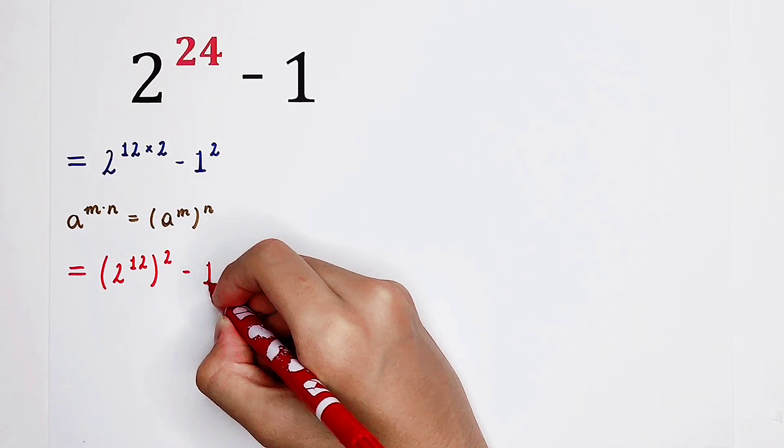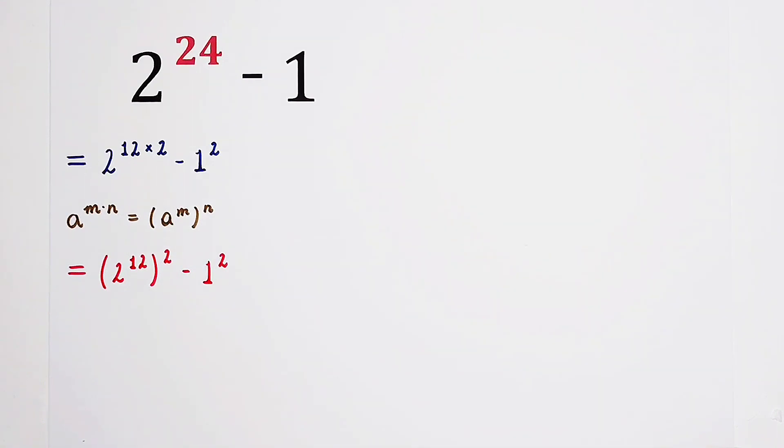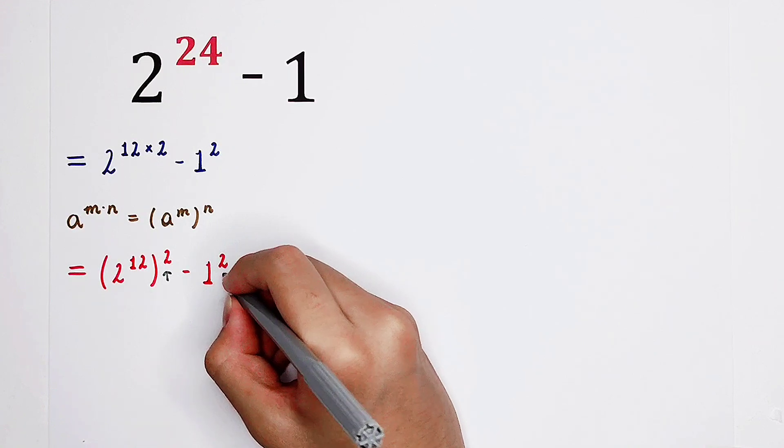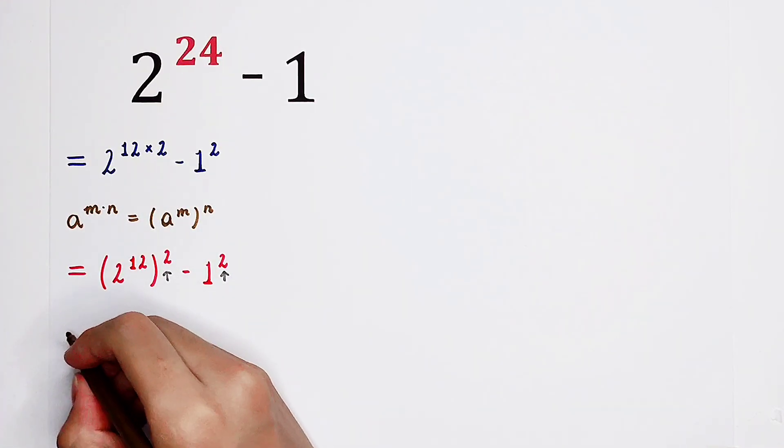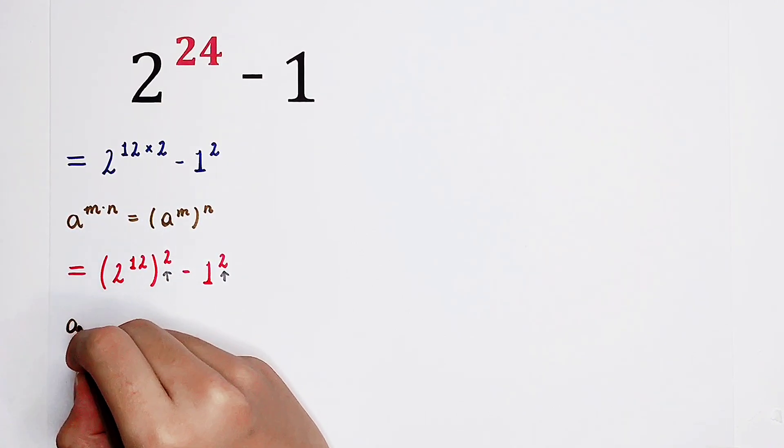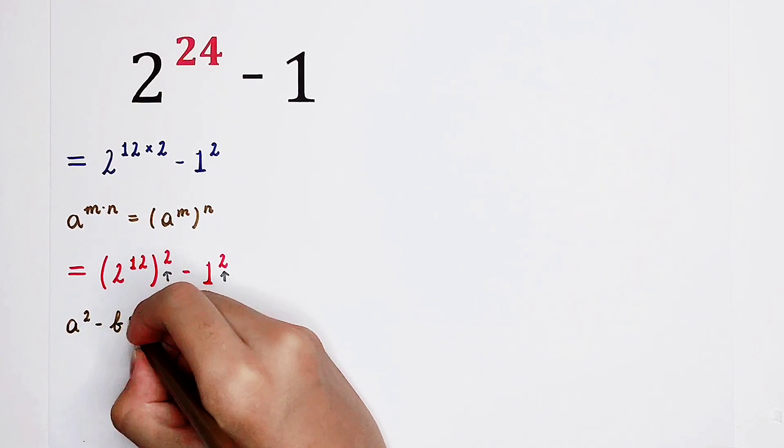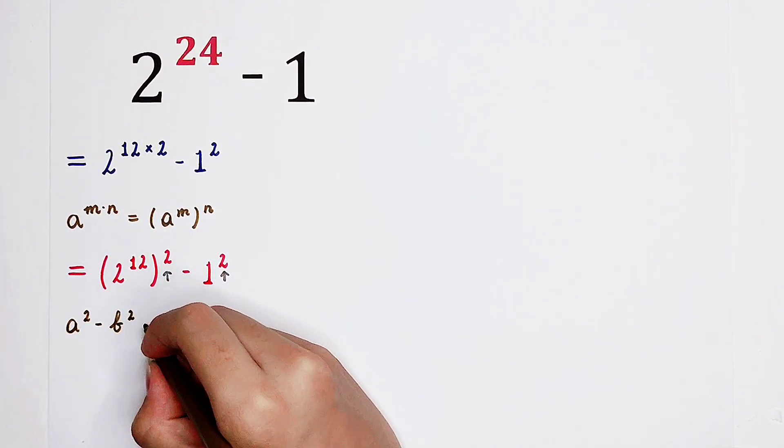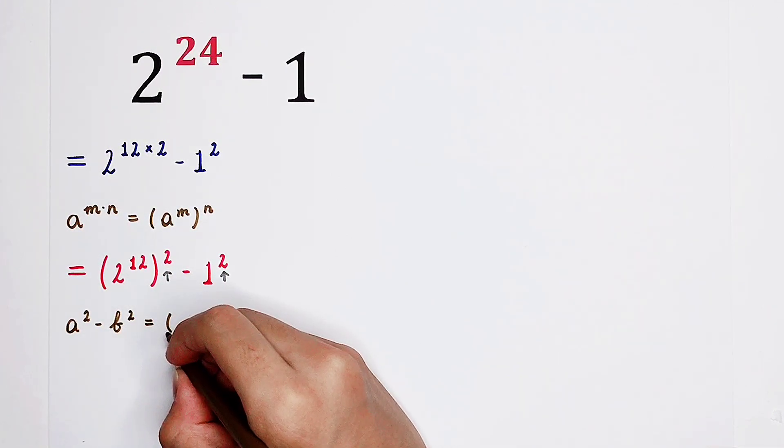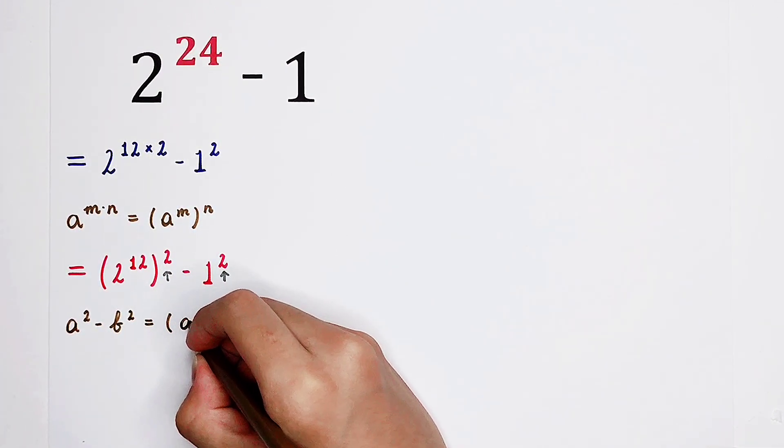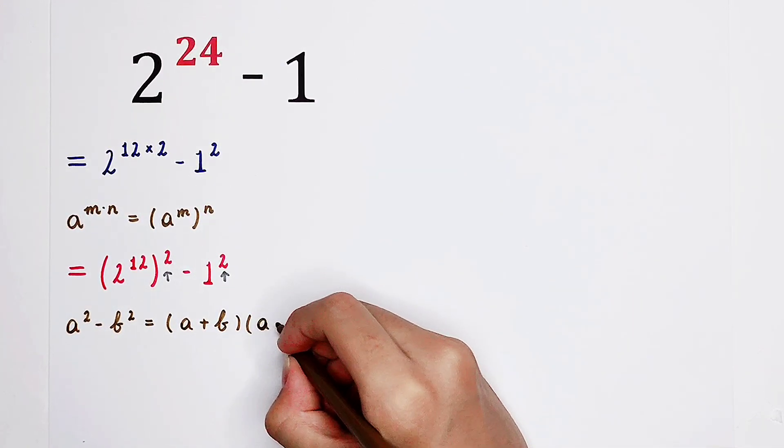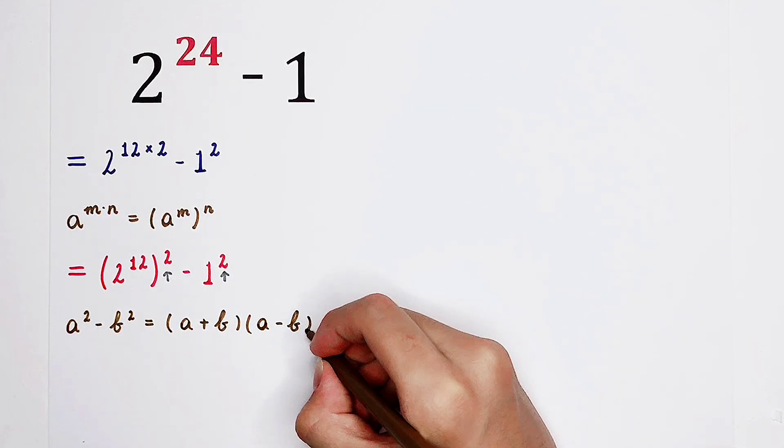And then, minus 1 squared. So now you can see that here appears a squared here as well. Of course, another formula. Which formula? Of course, a squared minus b squared. It is actually a factorization. It is a multiplication of these two terms.